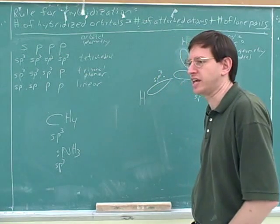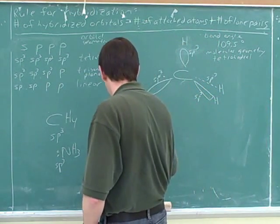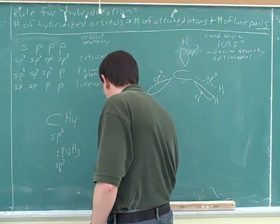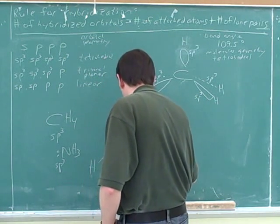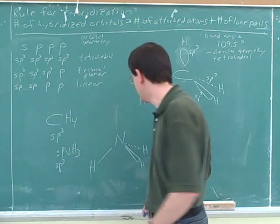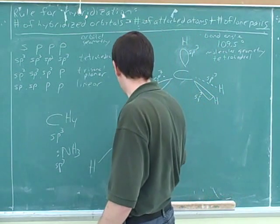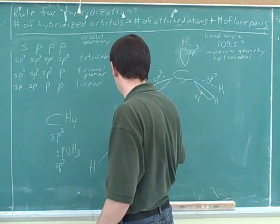So what geometry will the orbitals take? That should be tetrahedral. Now, how can we draw that? I'll draw a hydrogen here. A hydrogen here. Hydrogen here. But that's all the attached atoms. So what goes up here? The lone pair. What type of orbital will that be in?